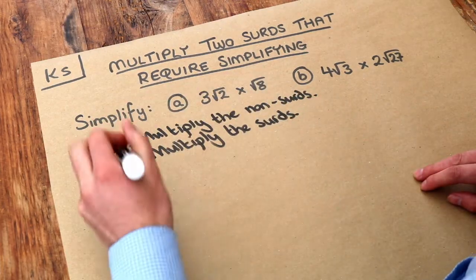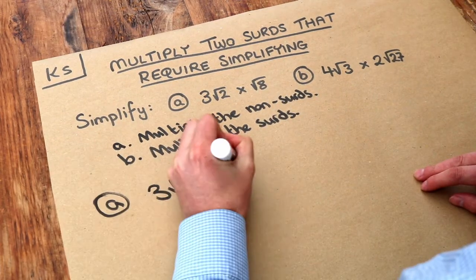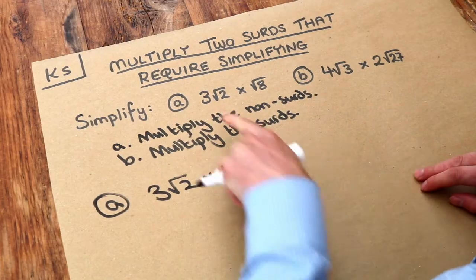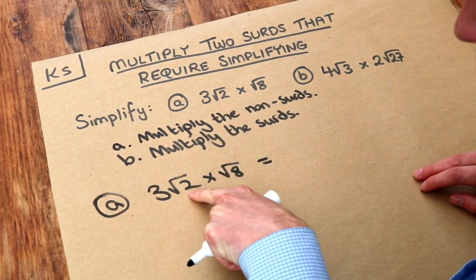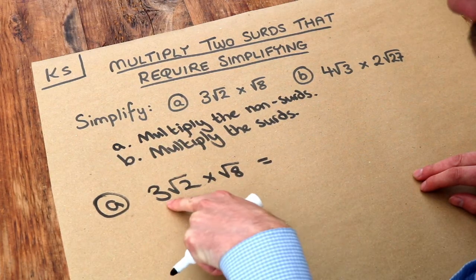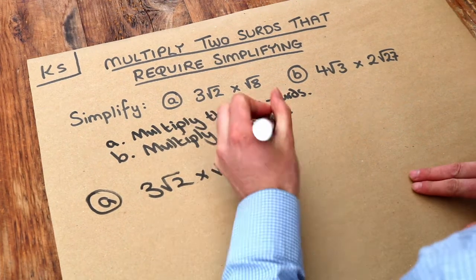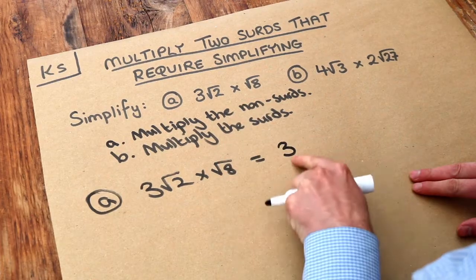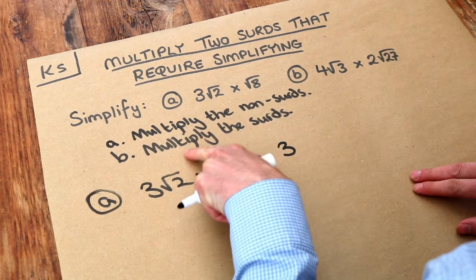So let's deal with the first one. Following the steps above, we multiply the non-surds. Well that's a surd there, the root two, that's a surd, the root eight, because that's a root over it. The only thing that's not a surd is that three, so we've got the three there. There's nothing to times it by, so it just remains as three.